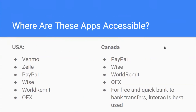Where are these apps accessible? In the USA, Venmo, Zelle, PayPal, Wise, World Remit, and OFX are all available. In Canada, PayPal, Wise, World Remit, OFX, and Interac — for free and quick bank-to-bank transfers — are all available.